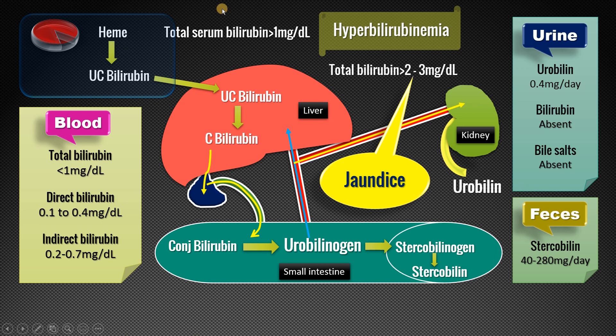The next type of hyperbilirubinemia or jaundice is due to pathology within the liver itself. There may be damage to hepatic parenchymal cells, or there may be intra-hepatic obstruction in the micro-biliary tree due to viral hepatitis, alcoholic hepatitis, poisonings, drugs, or cirrhosis of the liver. In all these conditions there will be jaundice, and this type is called hepatic or hepatocellular jaundice.